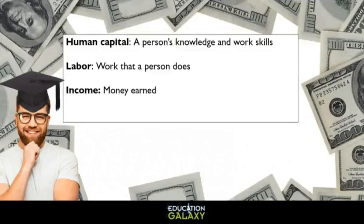The first thing we need to know are some basic definitions. Human capital is a person's knowledge and work skills. Labor means work that a person does. Income is the money earned. The more education, experience, and skills a person has, the more income they receive.